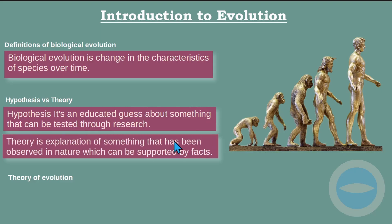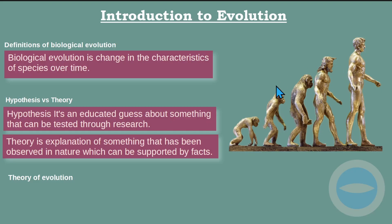A theory is an explanation of something that has been observed in nature, which can be supported by fact. With theory, we talk about something having facts — we did some research and experiments and gathered the facts. For example, if we say humans before were walking like monkeys, and then we do experiments, do some research, find some fossils and compare them with the modern human, and we find some resemblance between the fossils and the modern human — that tells us humans evolved and were looking like monkeys. This is what theory means.